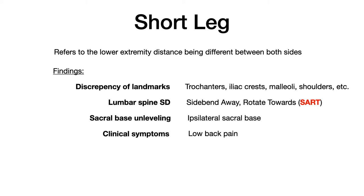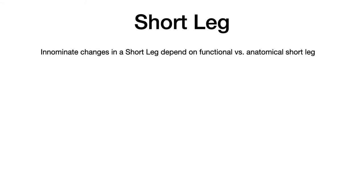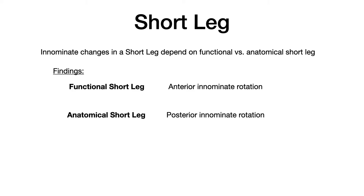Probably most high yield: there's going to be somatic dysfunction of the innominates. Which direction the innominate rotates depends entirely on whether the short leg is anatomical or functional. If you have a functional short leg, the somatic dysfunction in the innominate will be an anterior innominate rotation. But if the short leg is an anatomical short leg, the finding will be a posterior innominate rotation. This distinction is incredibly important and high yield.